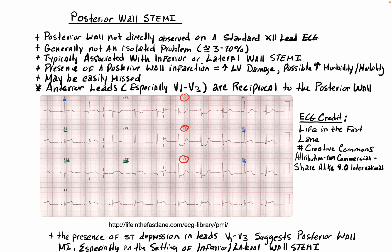Typically, it's going to be associated with either an inferior or a lateral myocardial infarction. The reason being — as discussed in the last video — is that most people are right dominant. That is to say, the posterior wall is supplied by the right coronary artery. Specifically, the posterior descending artery is supplied primarily by the RCA, and in around 10 to 15% of patients, the circumflex will supply the PDA. That's why the majority of humans will have either a right or left dominant circulatory pattern.